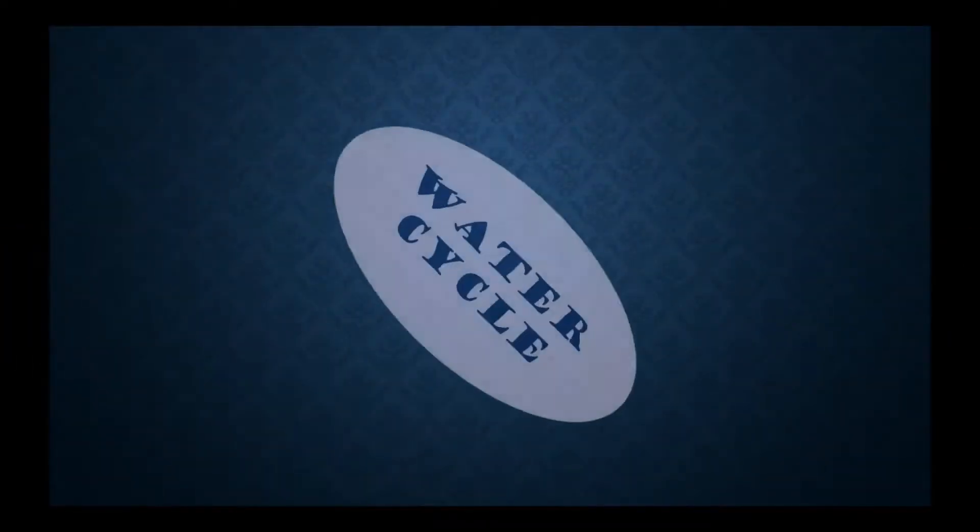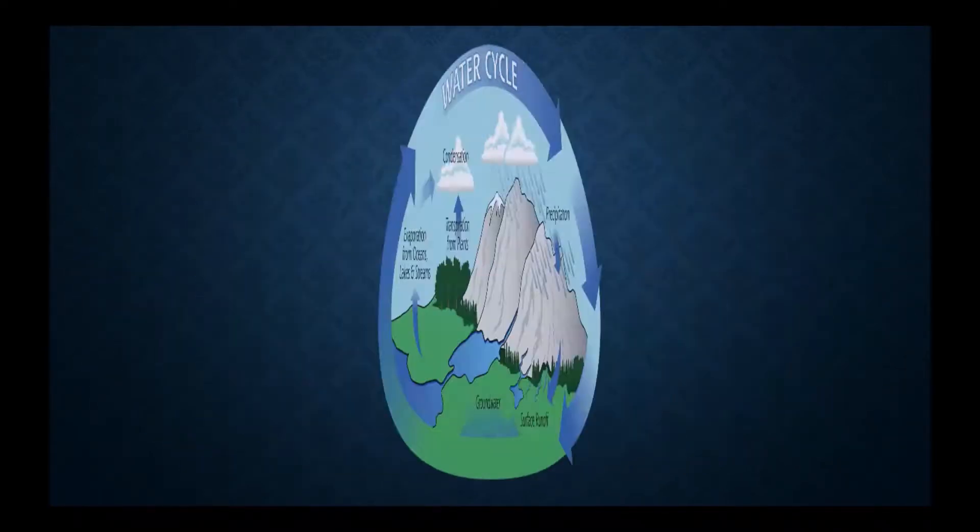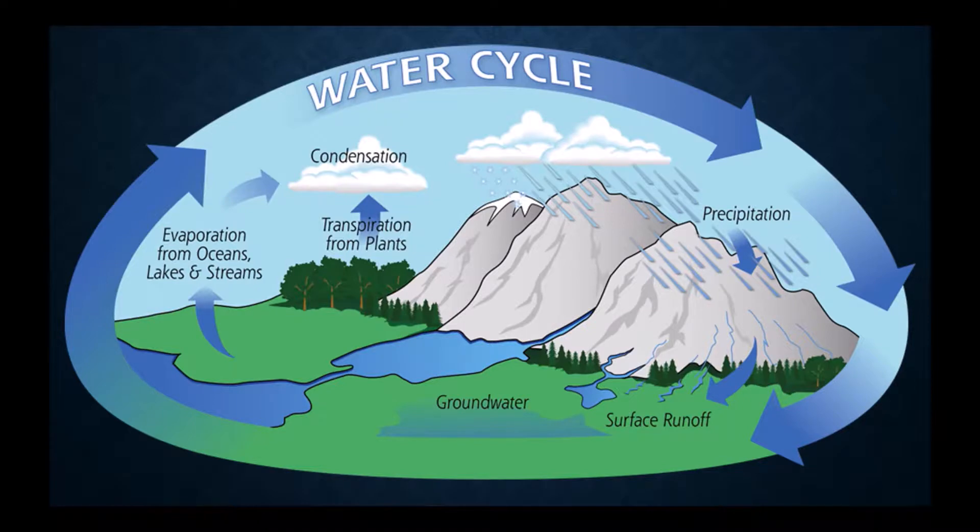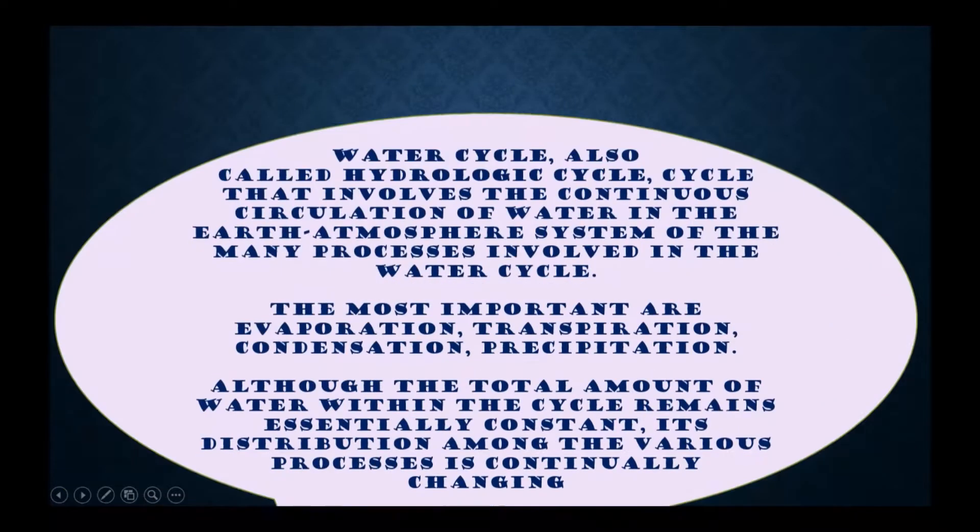Hey students, today we will learn something about water cycle. This is the full process of water cycle: condensation, precipitation, transpiration from plants, and evaporation from oceans, lakes, and streams. This is the full process of water cycle.